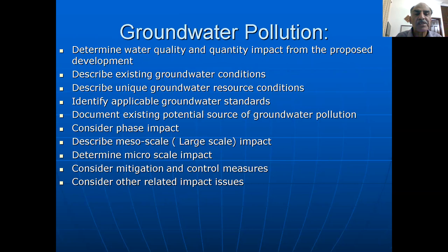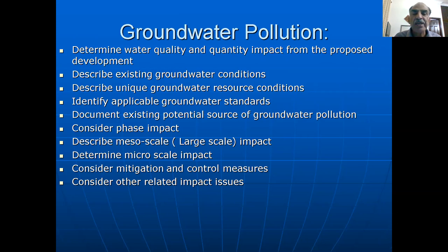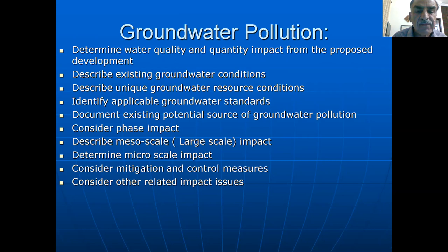The groundwater assessment is also very important because if the quality of surface water is affected, it ultimately affects the groundwater. We describe existing groundwater conditions, identify unique groundwater resource conditions such as wells, springs, and glaciers. We then identify the applicable groundwater standards from the National Environmental Quality Standards by the EPA, baseline existing groundwater, phase the impact on groundwater through different stages of the project, go from the macro scale to the micro scale, and then determine the mitigation and control measures while considering related impacts and issues.